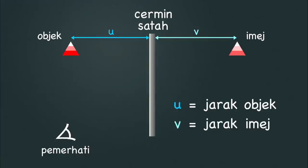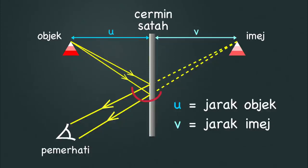Langkah tiga: Buat garisan bermula di atas imej dan sambungkan ke mata pemerhati. Lukis garisan putus-putus di dalam cermin dan garisan lurus di bahagian hadapan cermin. Langkah empat: Akhir sekali, buat garisan untuk sambungkan titik pada cermin dengan objek.